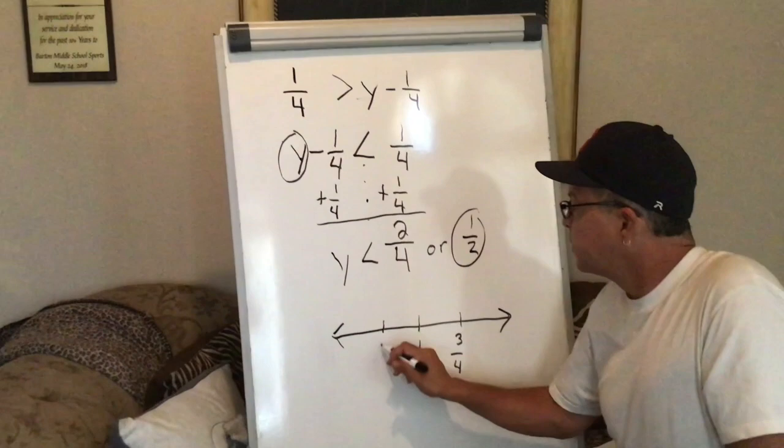I want to circle this number. Now I don't color it in because there's no equal line. And everything less than, it's like an arrow pointing that way.